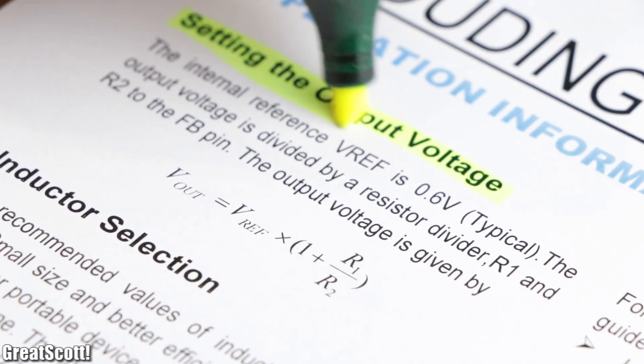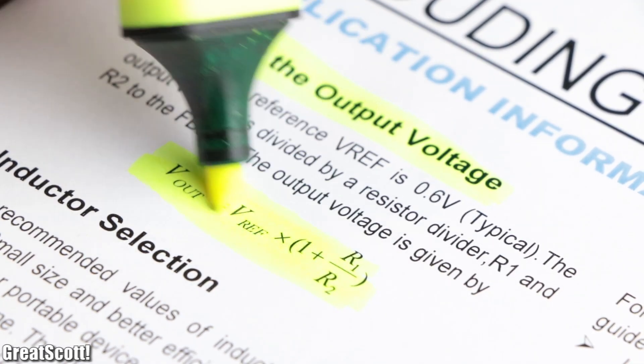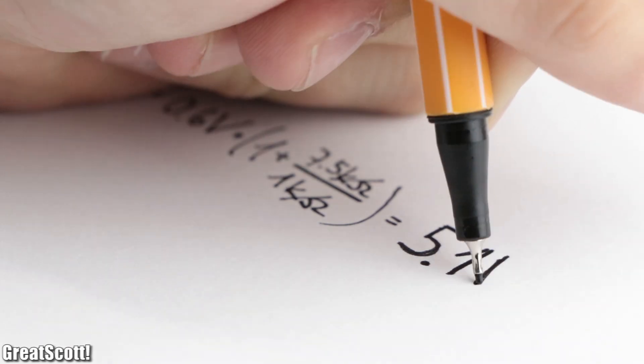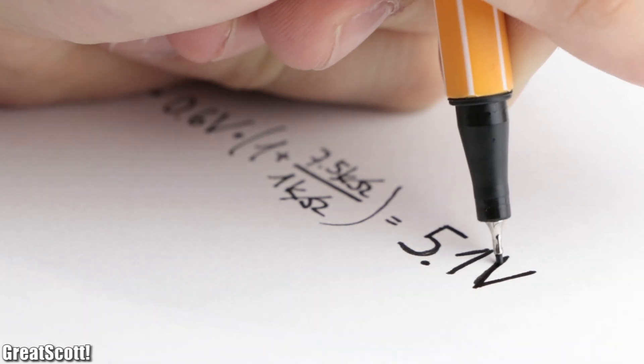Firstly we can set the output voltage by utilizing this formula. I went with the values of 7.5 kilohm and 1 kilohm for the feedback resistors, which sets the output voltage to 5.1 volts.